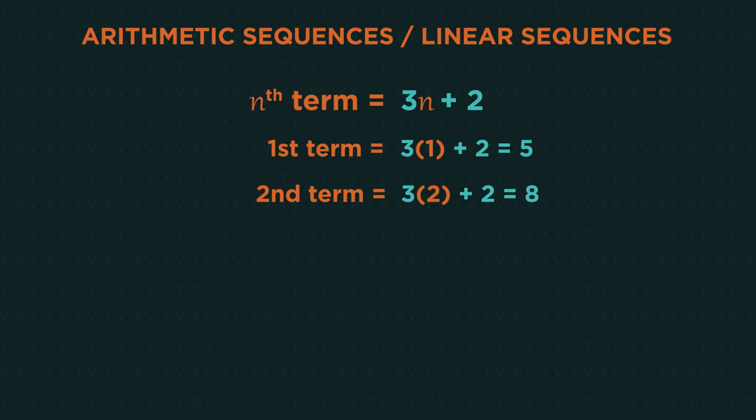For the second term, substitute n equals 2 into the formula. For the fifth term, substitute n equals 5. We can choose any term, the 100th.